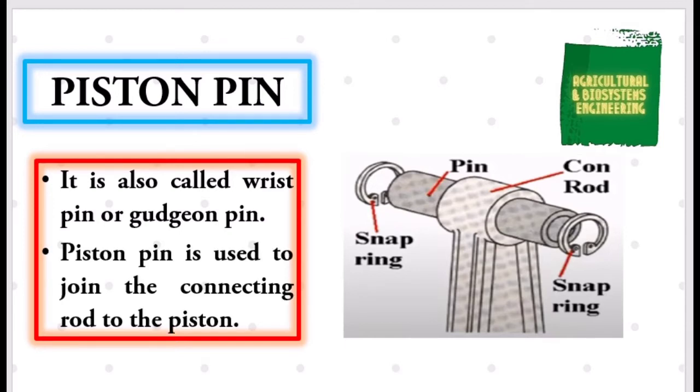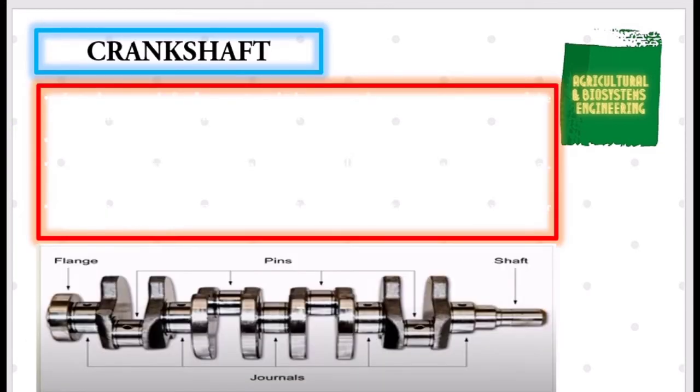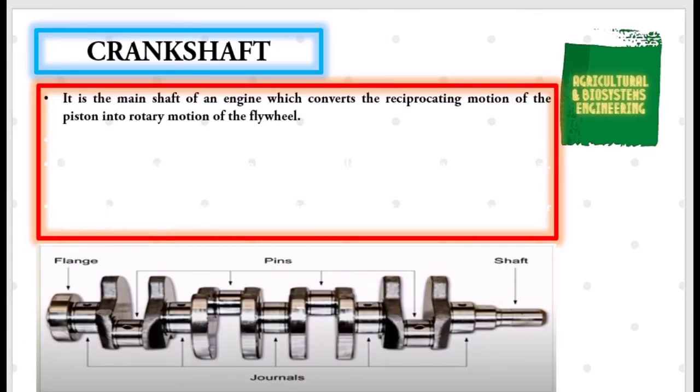Next, our crankshaft. It is the main shaft of an engine which converts the reciprocating motion of the piston into rotary motion of the flywheel. Usually the crankshaft is made of drop forged steel or cast steel.